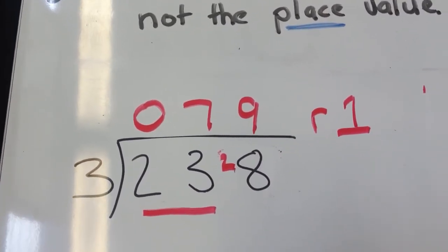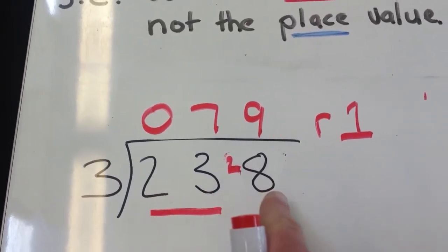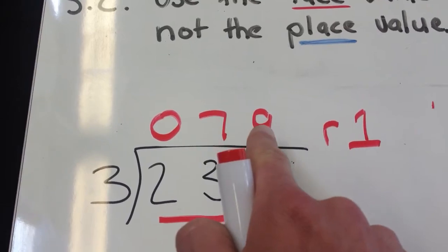Now there are other things you can do with remainders, but for the purpose of this video, this is the answer. So 238 divided by 3 is 79 remainder 1.